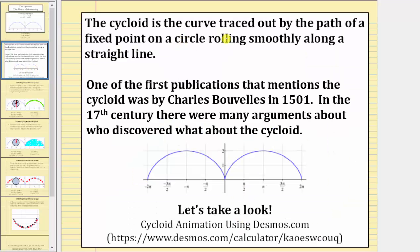The cycloid is the curve traced out by the path of a fixed point on a circle rolling smoothly along a straight line, which we'll take a look at in just a moment.